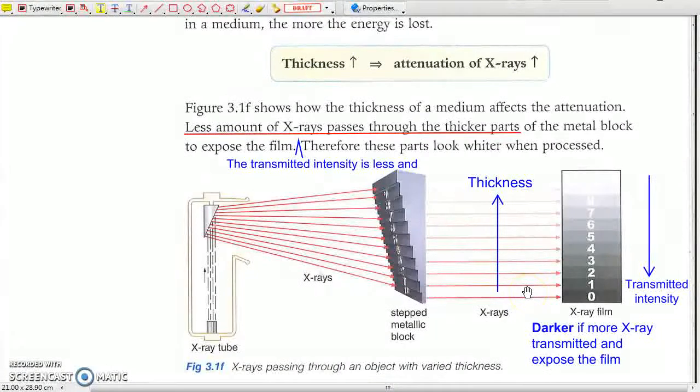When the attenuation is smaller, there will be larger transmitted intensity, and this area will appear darker in the X-ray film.